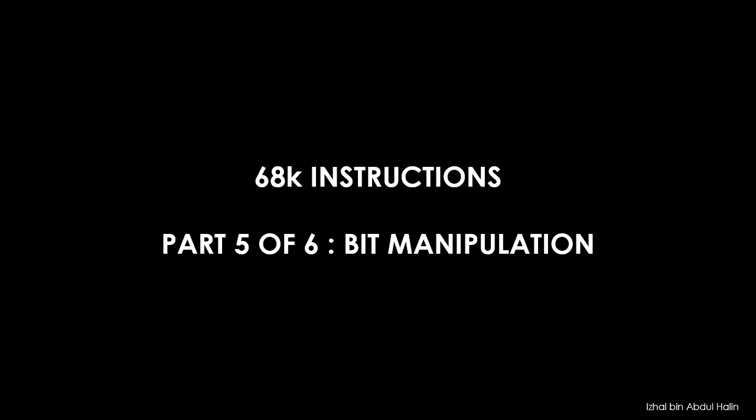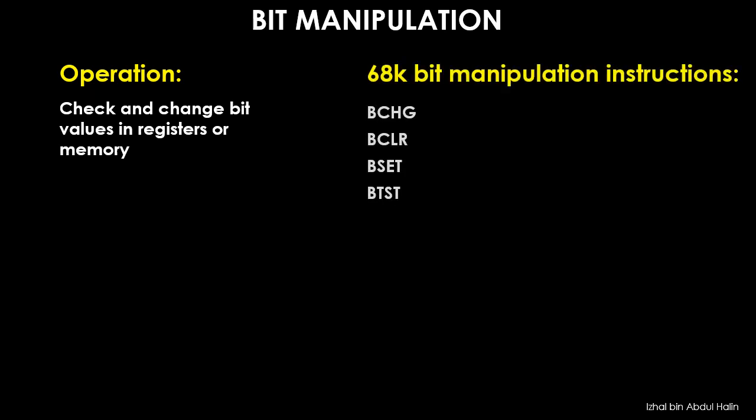The instructions in the bit manipulation group are used to check and change bit values in registers or memory. There are four instructions altogether in this group.